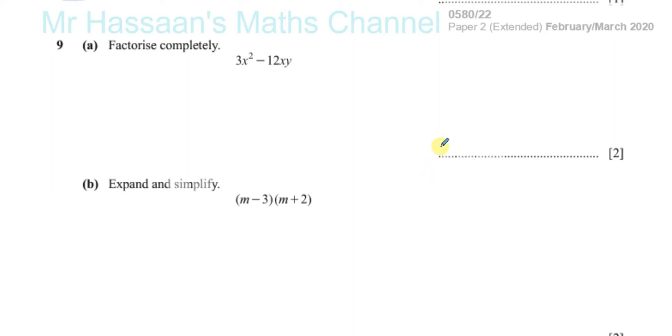Okay, question number nine from the paper two of February March 2020 IGCSE paper. Question nine part A is asking us to factorize completely, and they give us this expression to factorize.